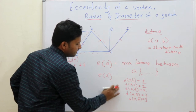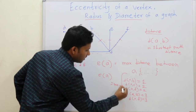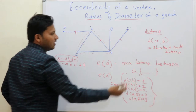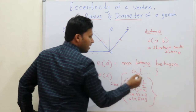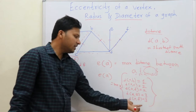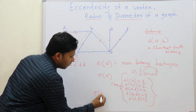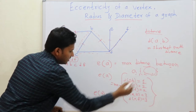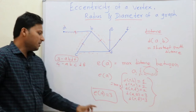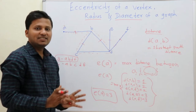Now we take the maximum of all these distances from A to all other vertices. The maximum distance here is 3. So the eccentricity of A is 3. This is how we find out the eccentricity.